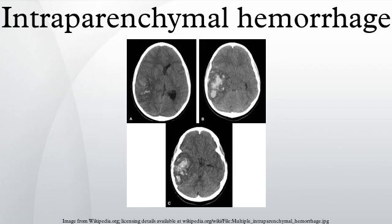Intracerebral hemorrhage is a severe condition requiring prompt medical attention. Treatment goals include life-saving interventions, supportive measures, and control of symptoms. Treatment depends on the location, extent, and cause of the bleeding, and can often reverse the damage done. A craniotomy is sometimes performed to remove blood, abnormal blood vessels, or a tumor. Medications may be used to reduce swelling, prevent seizures, lower blood pressure, and control pain.